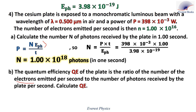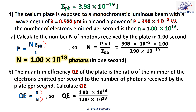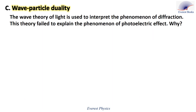For part b, the quantum efficiency QE of the plate is the ratio of the number of electrons emitted per second to the number of photons received by the plate per second. Calculate QE: QE equals n over N, where n is the number of electrons emitted per second (equal to the number of effective photons) and N is the number of incident photons. Therefore the quantum efficiency is 1 percent.